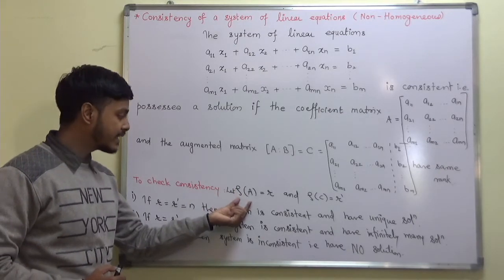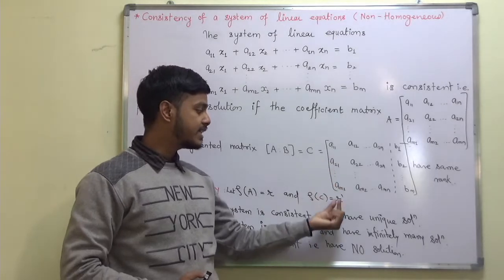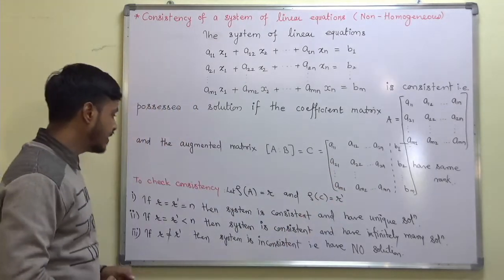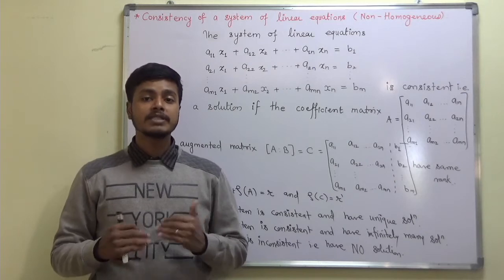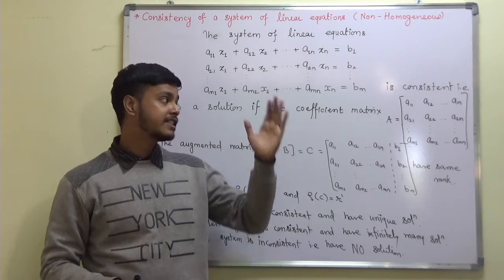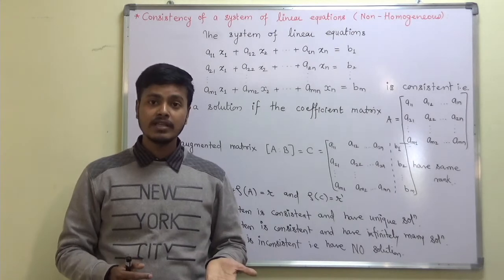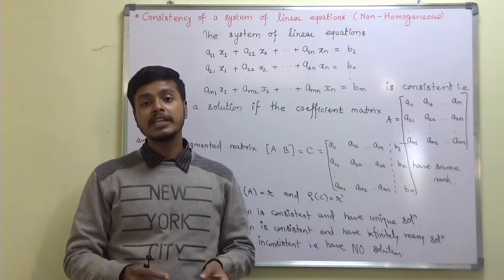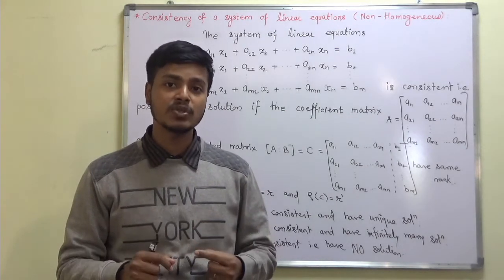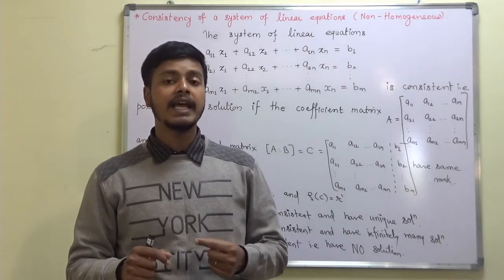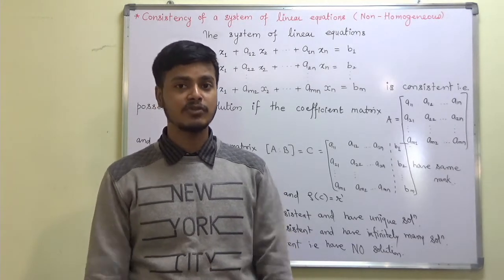Let the rank of matrix A be r and the rank of augmented matrix C be r-dash. Then there are three different possibilities with the help of which the given system will possess a solution. If it possesses a solution, it may have a unique solution, it may have infinitely many solutions, or it has no solution.